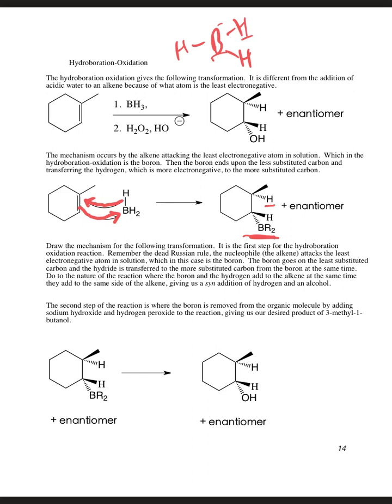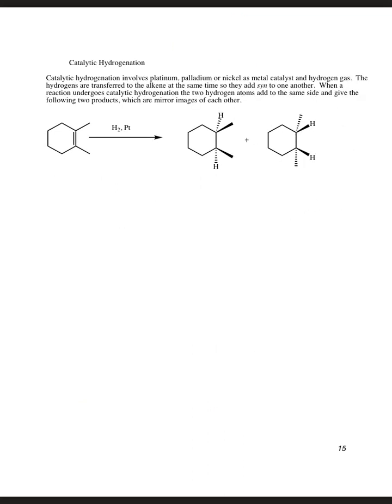In the second step of the reaction, we replace the boron by oxidizing it off with hydrogen peroxide and hydroxide. We won't draw the full mechanism in this class — a rearrangement occurs in that step — but you keep the stereochemistry of what the carbon-boron bond was for the oxygen. So the most important thing to be careful of is keeping the stereochemistry the same.